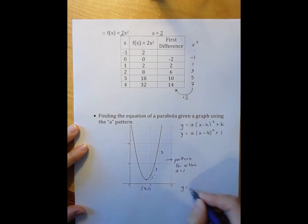So, my equation is y equals 1 times the quantity x minus 4 squared plus 1. And then I can write that without the 1 in the front because multiplying by 1 keeps the value the same.